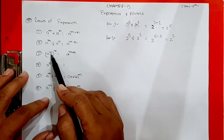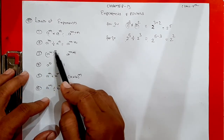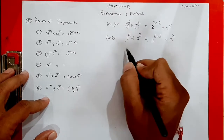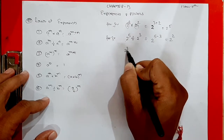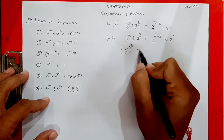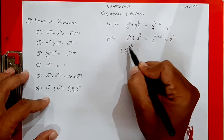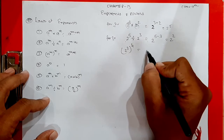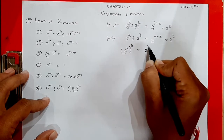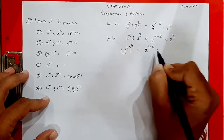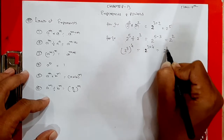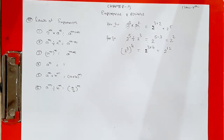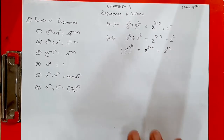The third rule is: a raised to m raised to n — when a power itself has a power, we multiply the two powers. For example, 2 raised to 3 raised to 4 means power of a power, so we multiply: 2 raised to 3 times 4, which equals 2 raised to 12.